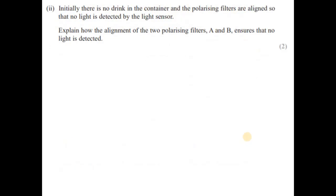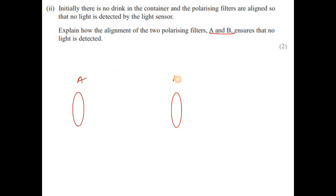Initially there is no drink in the container and the polarizing filters are aligned so that no light is detected by the light sensor. Explain how the alignment of the two polarizing filters A and B ensures no light is detected. We have polarizer filter A and polarizer filter B, with a light sensor on one side and a light source on the other.